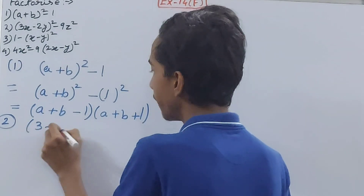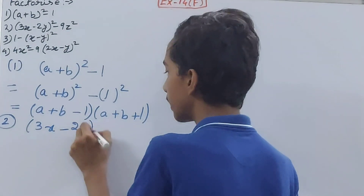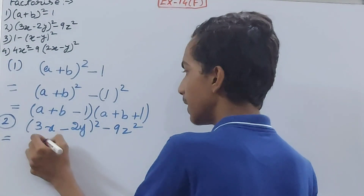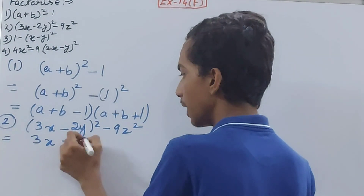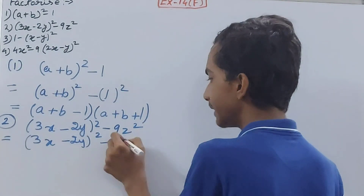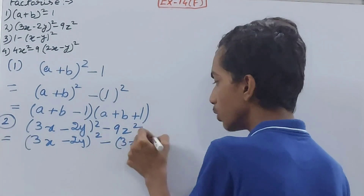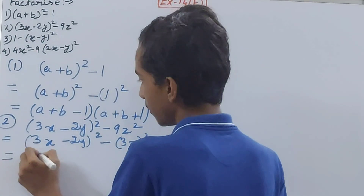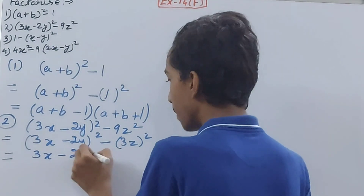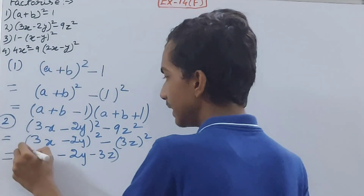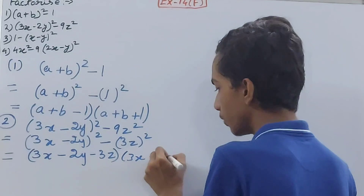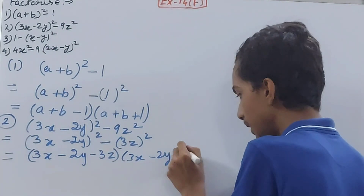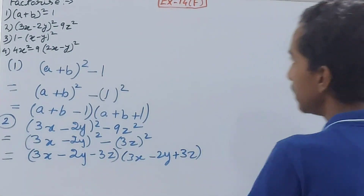The second question is (3x - 2y)² - 9z². You write (3x - 2y)² as it is, and 9z² as (3z)². Opening the brackets using the identity, one bracket gives (3x - 2y - 3z) and the other gives (3x - 2y + 3z).